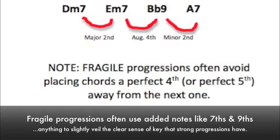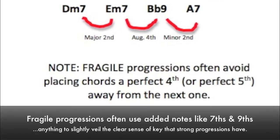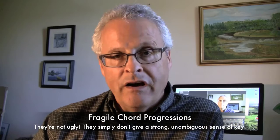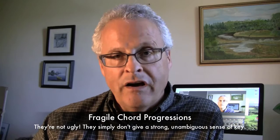A fragile progression is one that doesn't do that. It's a little more ambiguous with the key center. There is no one particular chord that seems like it's taking precedence as being a tonic chord. Now fragile progressions — we use that term — it's not supposed to mean that it's ugly or undesirable in any sense of that word at all. Fragile simply means that it doesn't have that strong sense of key, the unambiguous tonic chord. So we have these two categories of chords.